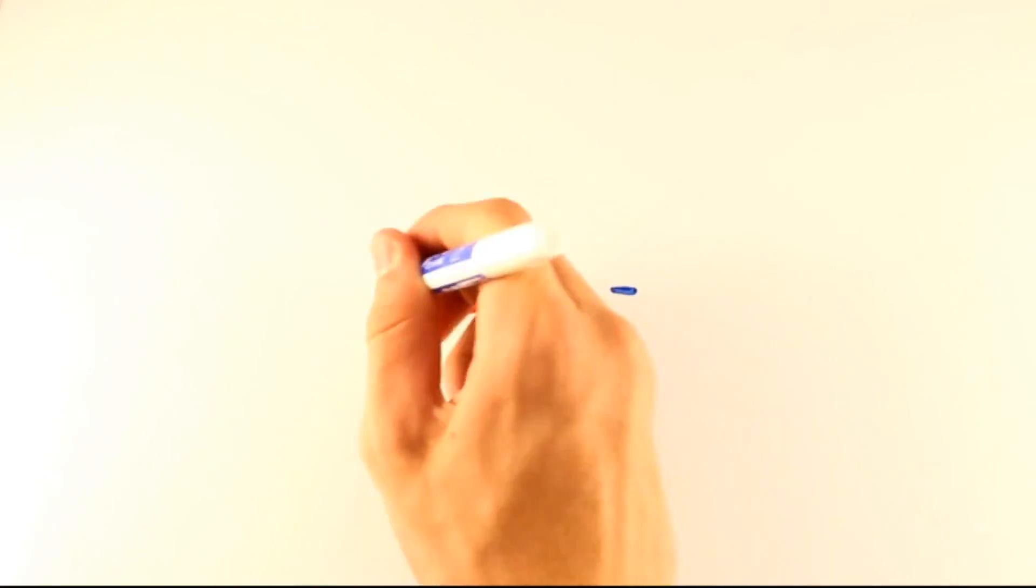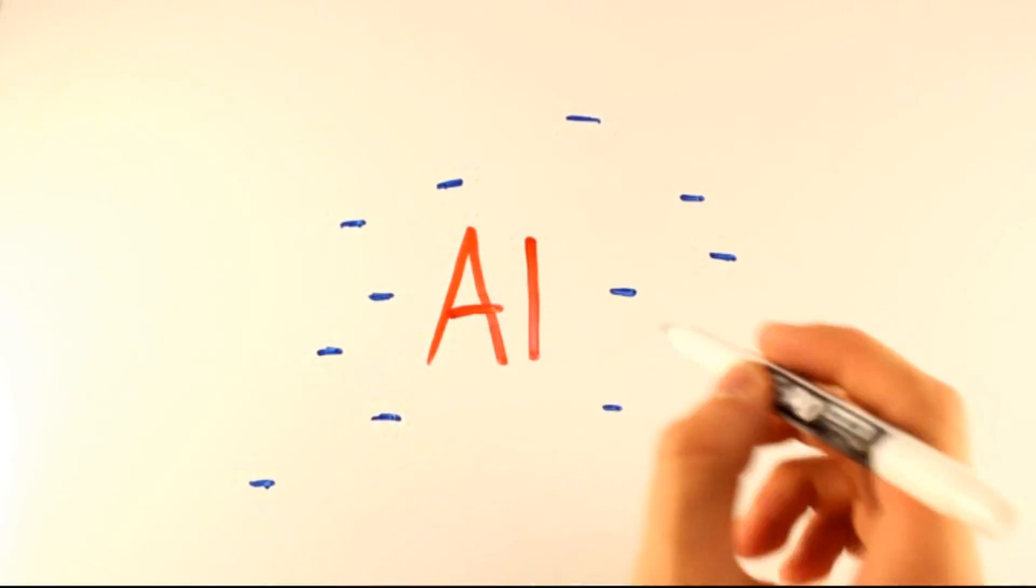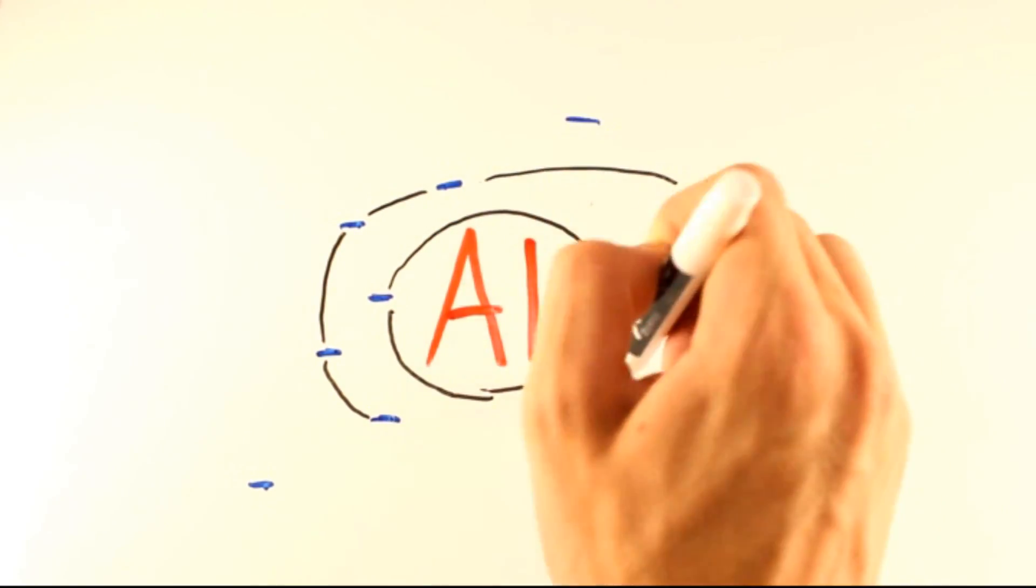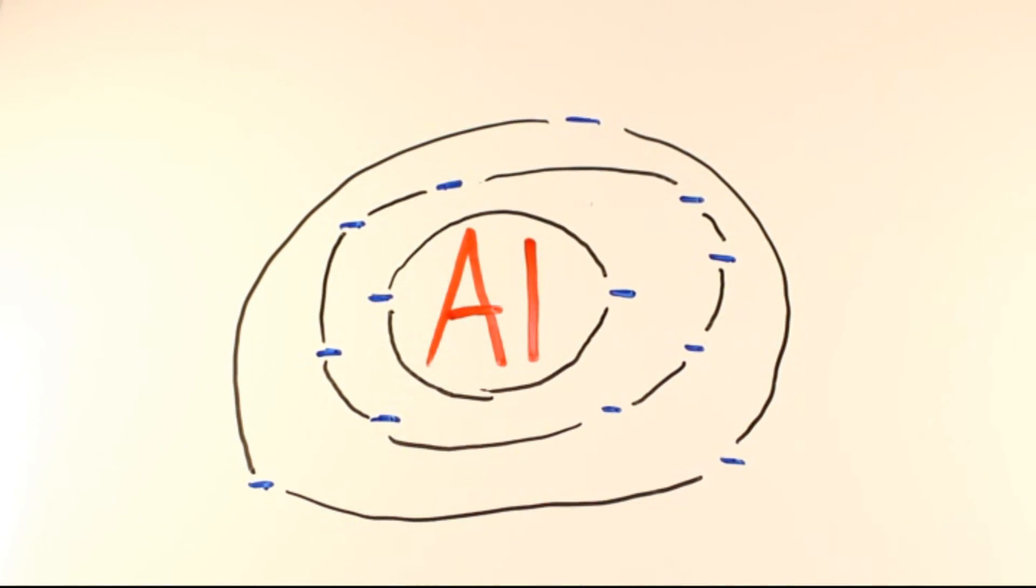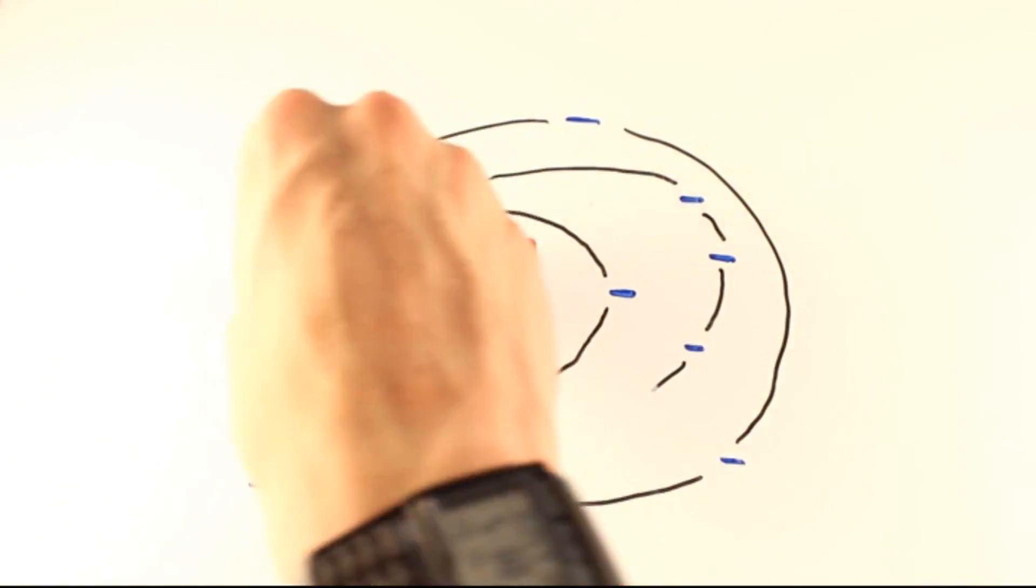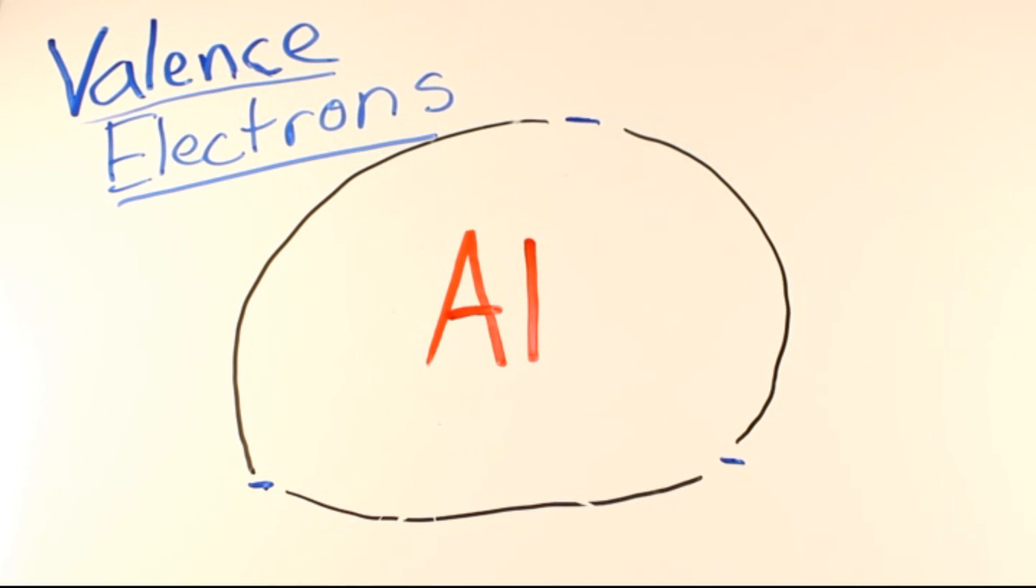In the center, there is a positively charged nucleus. Flying around the nucleus are electrons, which are negatively charged. There are many layers of electrons, but right now we only care about the outer layer. These are called valence electrons.